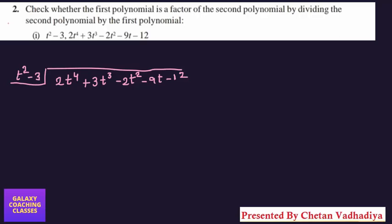Hello friends, my name is Chetan Vadhadiya and today we are going to study CBSE class 10th maths exercise 2.3, question number 2: check whether the first polynomial is a factor of the second polynomial by dividing the second polynomial by the first polynomial. The first polynomial and second polynomial are identified, and we need to divide the second by the first.